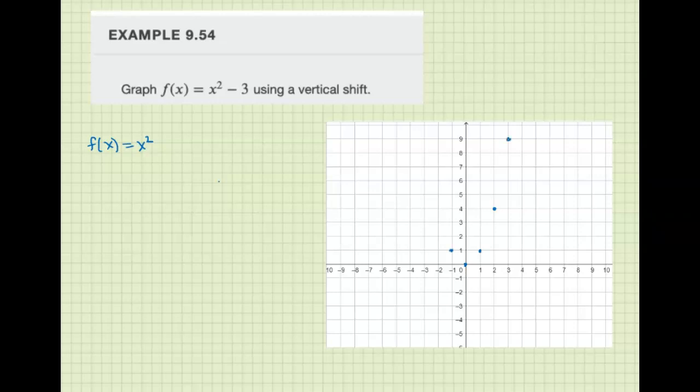(-1)² is 1, (-2)² is 4, and (-3)² is 9. So here's our basic x² parabola.